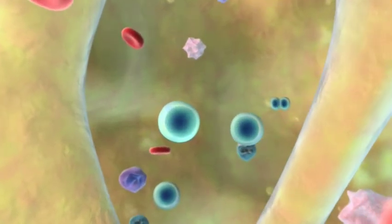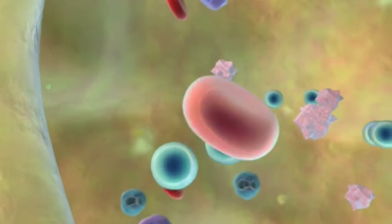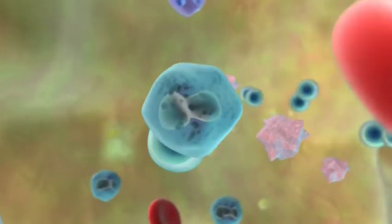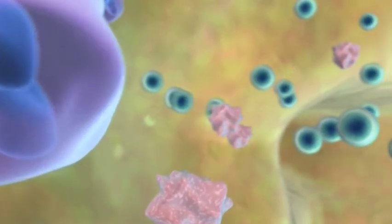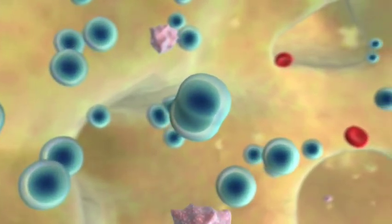In MDS, genes that induce the differentiation of bone marrow stem cells into erythrocytes, granulocytes, monocytes, and platelets, and prevent the abnormal proliferation of immature blast cells, fail to function.